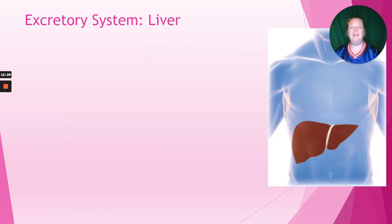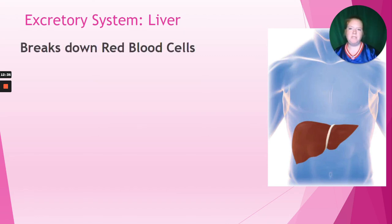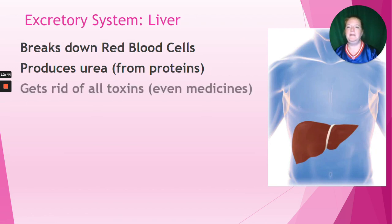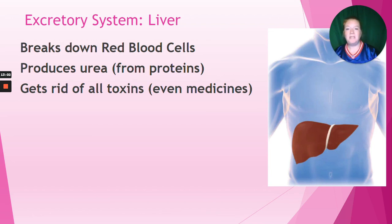Then we have the liver. The liver is super important - it's one of the vital organs; you literally can't survive without your liver. The liver helps to break down red blood cells and produces urea from proteins. It gets rid of all toxins, even medicines. Anything that is ingested, your liver is like the detoxifier. When people drink too much alcohol, it stresses their liver and it can get damaged. Even taking things like Tylenol and ibuprofen still has to get filtered through the liver and can stress it if taken too often.